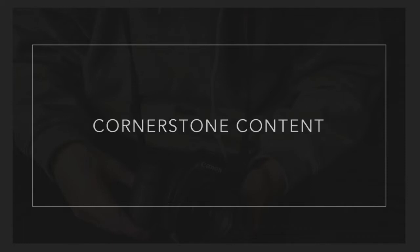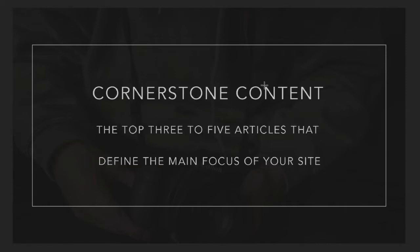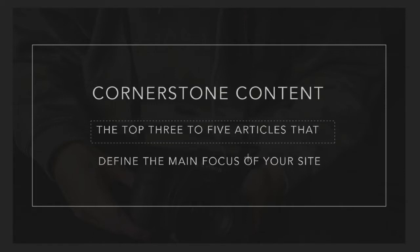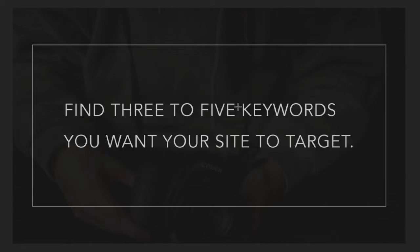We're going to create what's called cornerstone content for your website. Cornerstone content is the content that defines your site. We're going to create three to five articles that define the main focus of our entire site. Essentially, we're selecting our top three to five keywords that we want our site to rank for, and then we're building content that points to those main articles. We're just going to create one page for each keyword that you want to rank for.